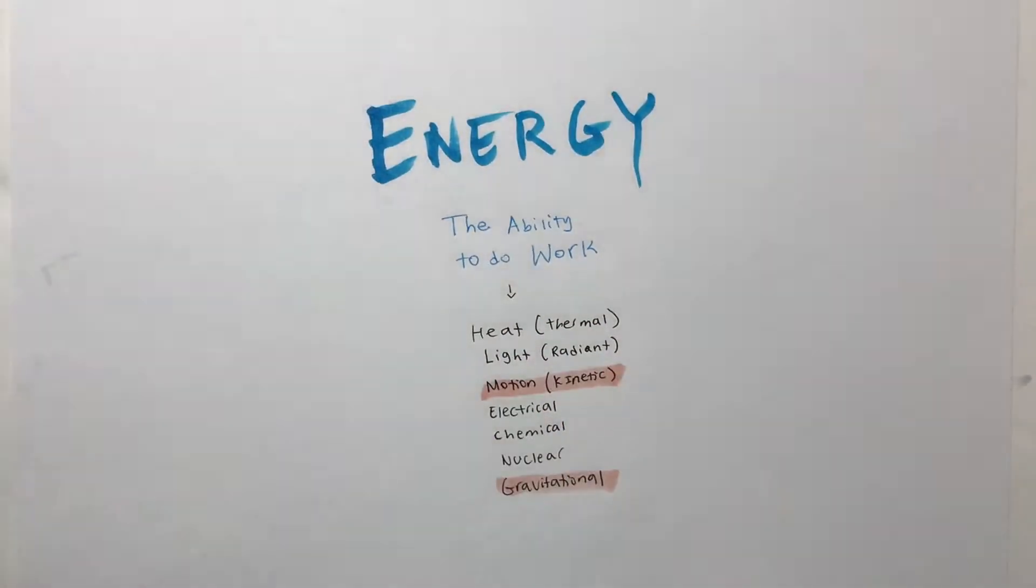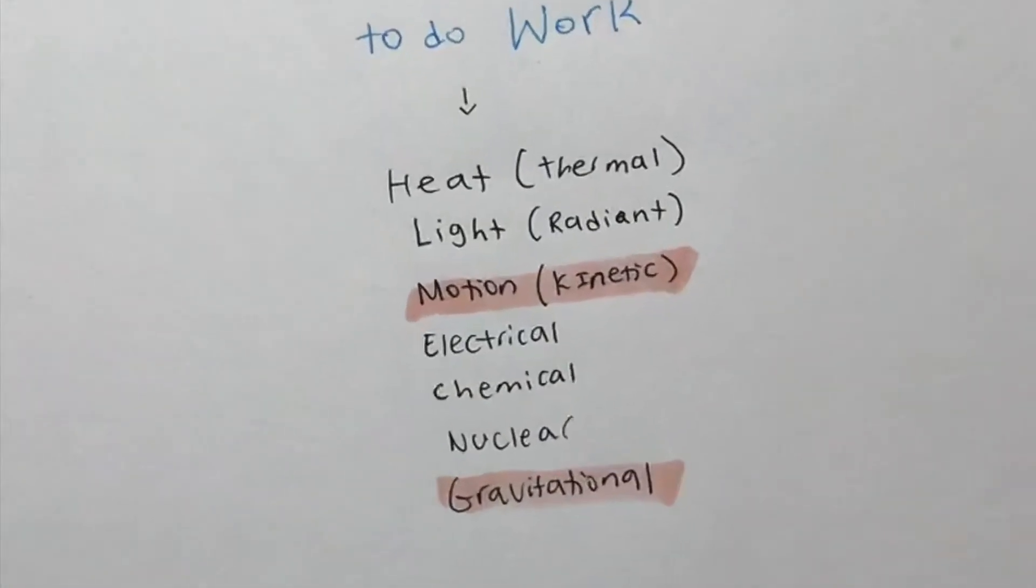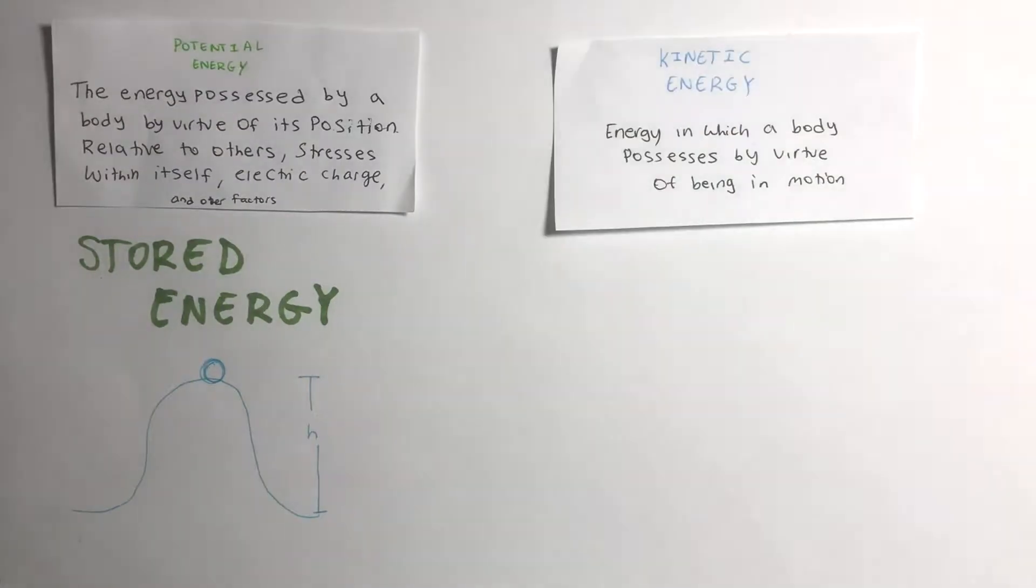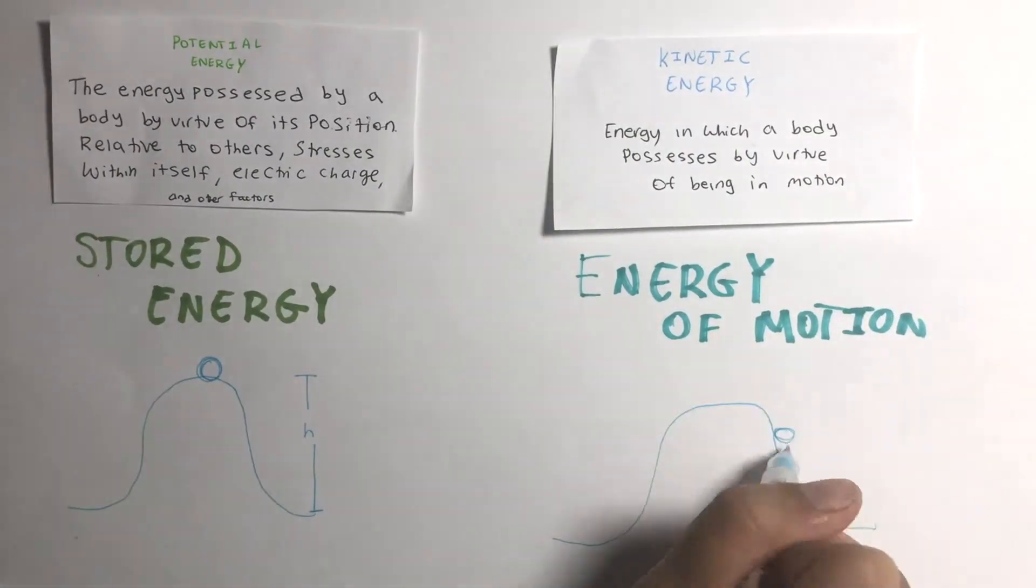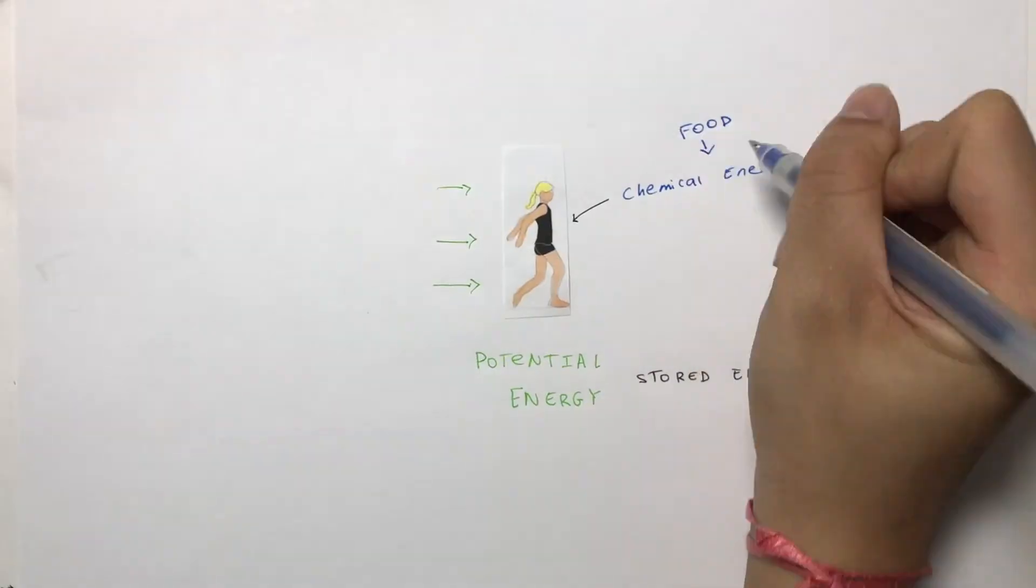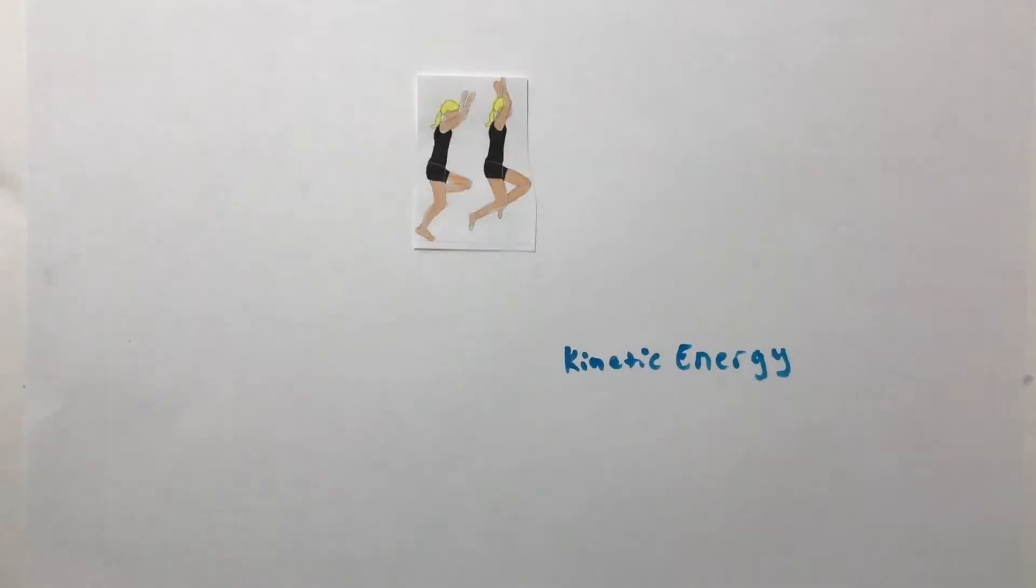However, we're going to be looking at gravitational potential energy and kinetic energy. Potential energy is defined as stored energy, whereas kinetic energy is the energy of motion. Before she jumps, she has stored energy, which comes from the food she ate. But what about after she jumps?